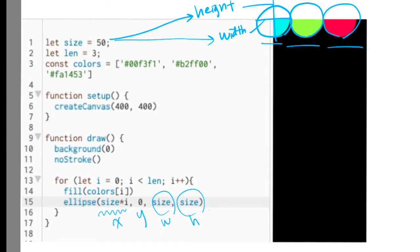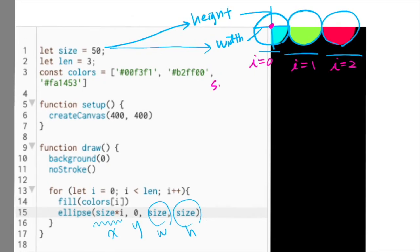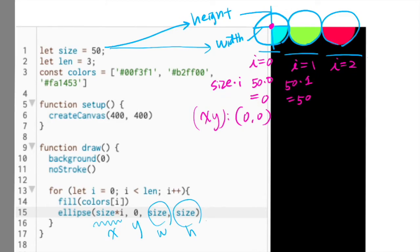In this for loop, i gets updated from 0 to 1 and then 2. So the first circle's x-coordinate is size * 0, which is 0 — its coordinate is (0, 0). The second circle: 50 * 1, so it's (50, 0). And the last one: size is 50 and i is 2, so it's (100, 0).